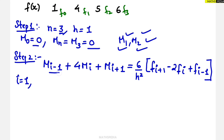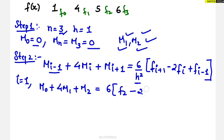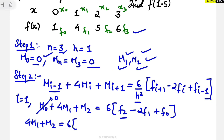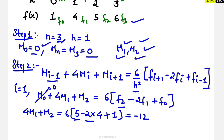Substituting i equals 1 into the formula: since i minus 1 equals 0, we get M0 plus 4M1 plus M2 equals 6 over h squared times (F2 minus 2F1 plus F0). Since M0 equals 0 and h equals 1, this becomes 4M1 plus M2 equals 6 times (5 minus 8 plus 1), which gives 4M1 plus M2 equals minus 12. This is our first equation.